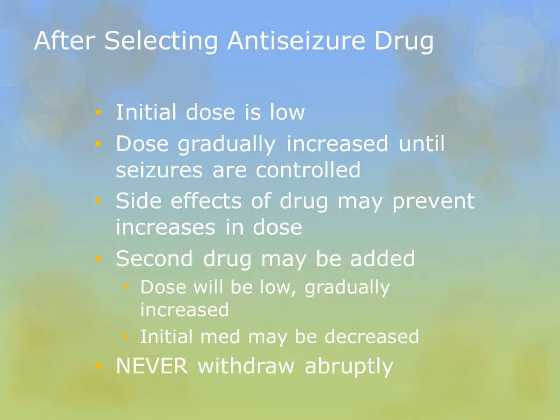The goal of seizure medications is to suppress neuronal activity, to prevent abnormal or repetitive firing, and thus control the seizure. We start with the lowest dose and work up slowly so we can avoid side effects while controlling the seizure. Sometimes those side effects prevent an increase in dose and we may have to change drugs.